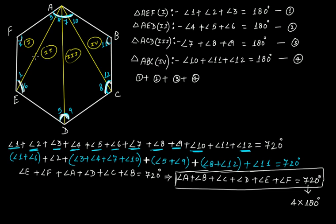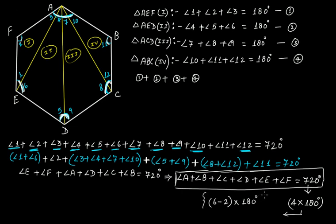Since we have formed four triangles, this is four times 180 degrees. For one triangle it is 180 degrees, therefore for four triangles it is four times 180 degrees. Another way to look at this: four is actually six minus two, so this is (6 minus 2) times 180 degrees — six being the number of sides of this polygon, that is a hexagon in this case.